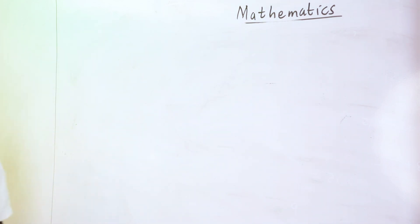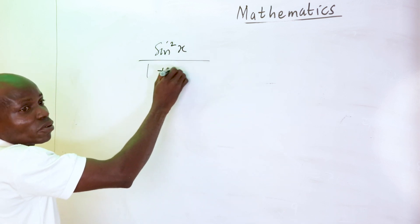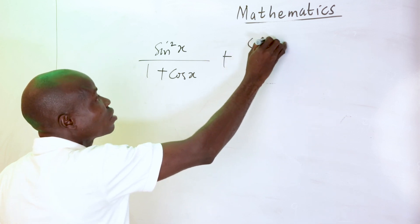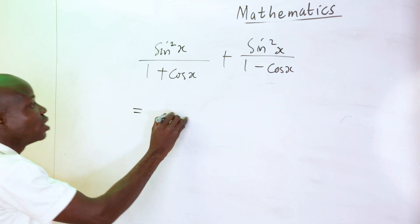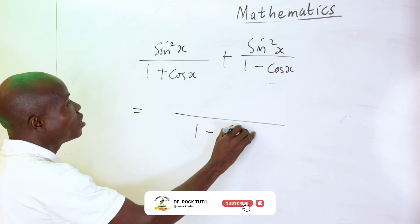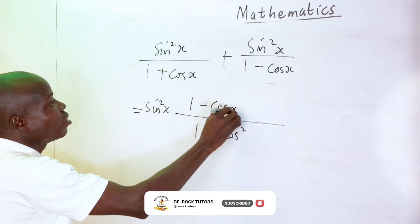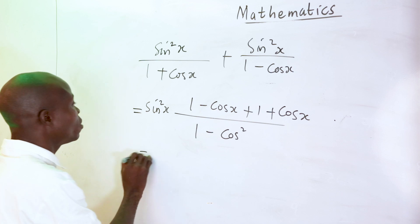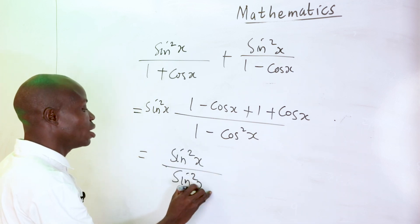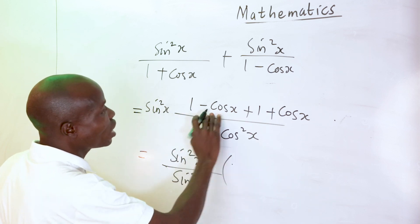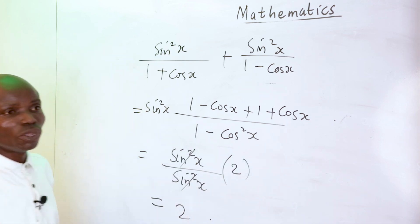Question 90: simplify sin²x over (1 plus cos x) plus sin²x over (1 minus cos x). Finding the LCM, which is (1 minus cos²x), and factorizing sin²x, we get sin²x times [(1 minus cos x) plus (1 plus cos x)] over (1 minus cos²x). Since 1 minus cos²x equals sin²x, the cos x terms cancel, leaving 2 over 1, which is 2. The answer is option E.